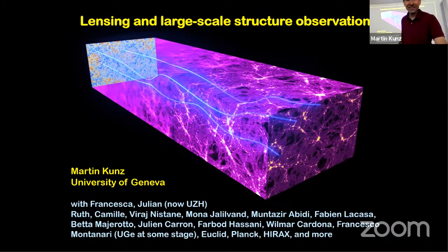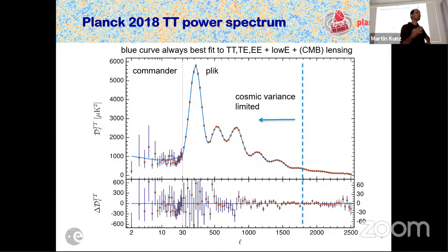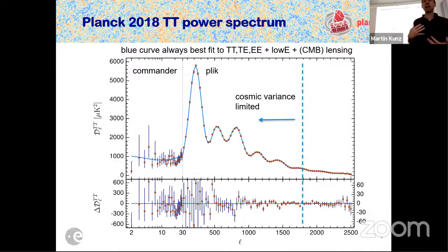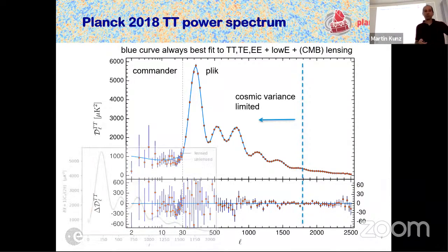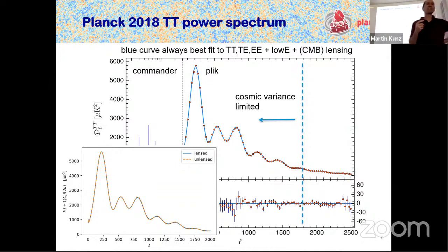Here is the first illustration of lensing: the CMB power spectrum from the Planck 2018 release. It carries a signature of lensing that is completely unavoidable — we can't go back and observe the original CMB. I've plotted what we expect: the blue curve contains lensing, the yellow dashed one has lensing turned off. You can clearly see the huge difference between the two curves, so it's natural to wonder whether this is relevant at all.